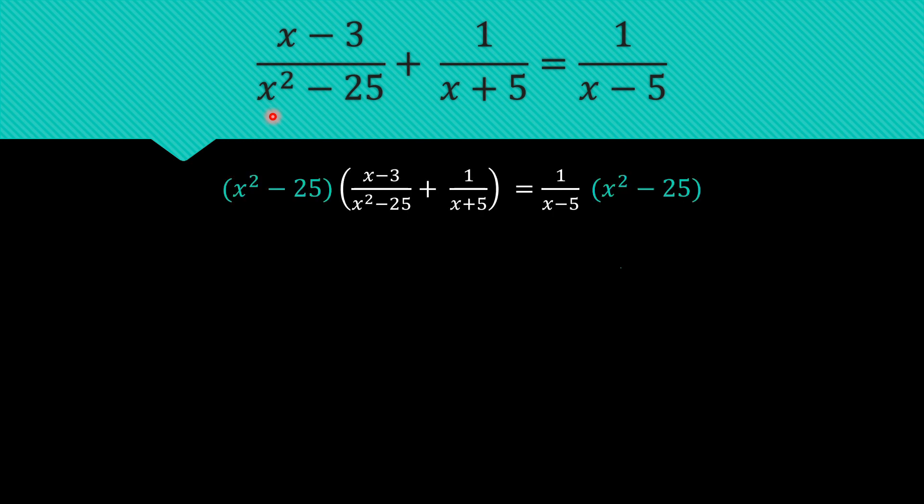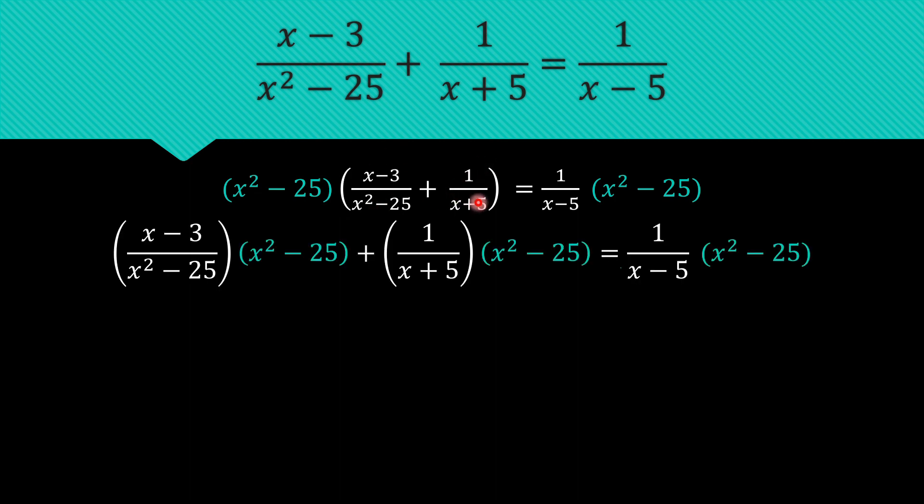So if we multiply both sides with x squared minus 25, our equation will look like this. So let's distribute x squared minus 25 to the terms inside the parenthesis and we get an expression like this. This side remains the same and here x squared minus 25 is distributed to both the rational functions inside the parenthesis.